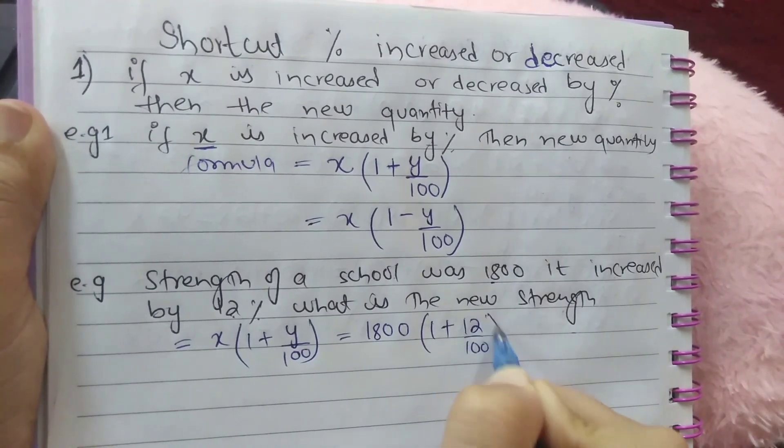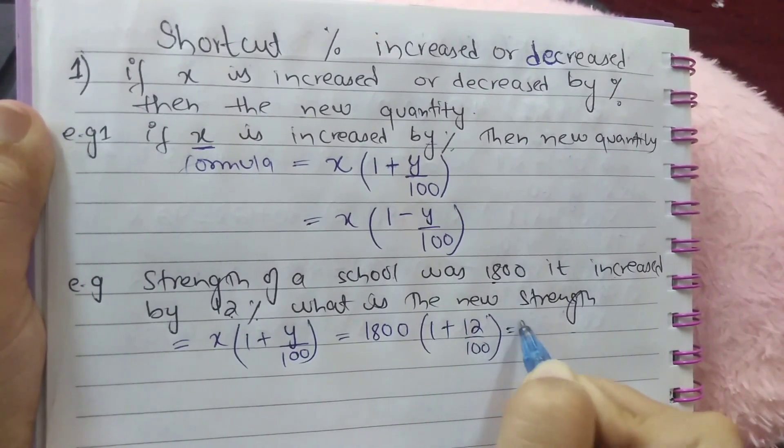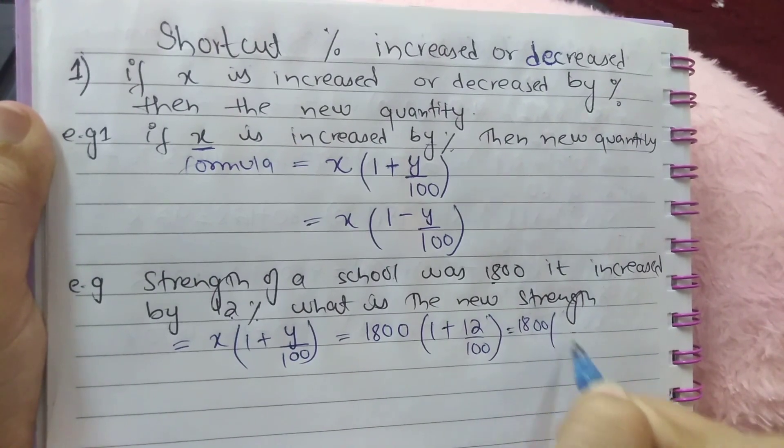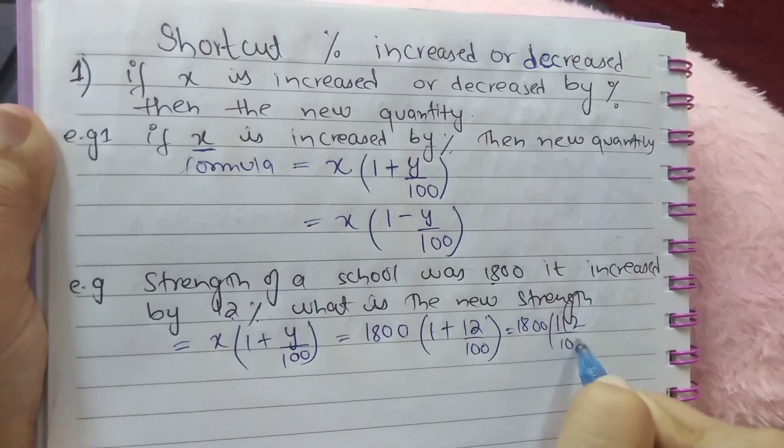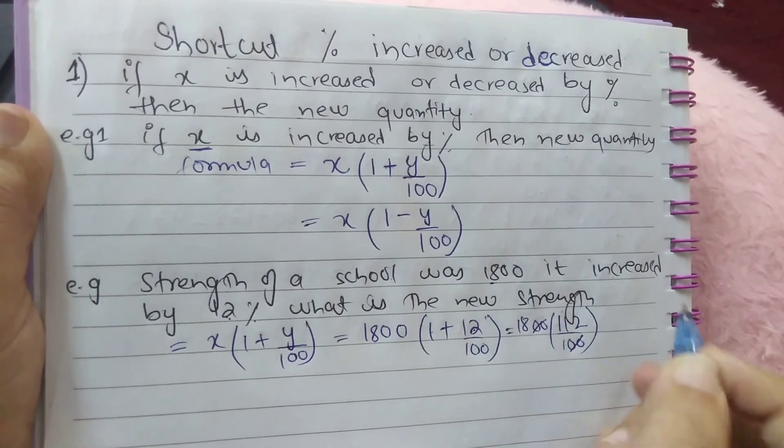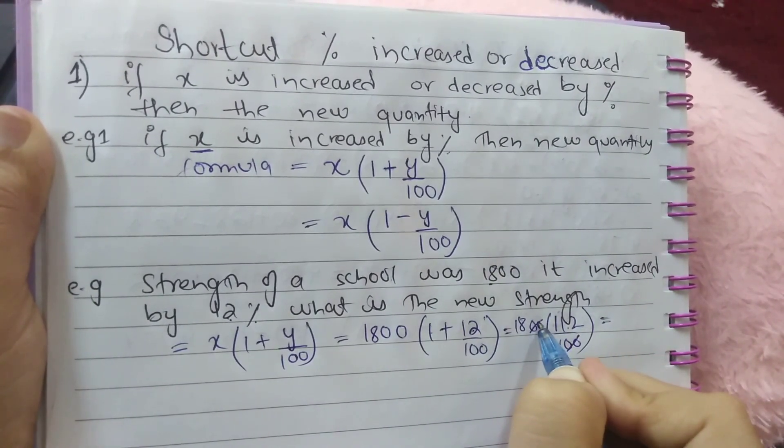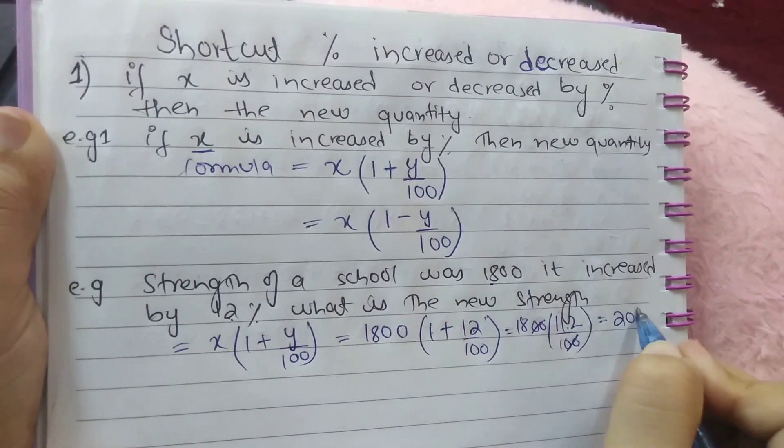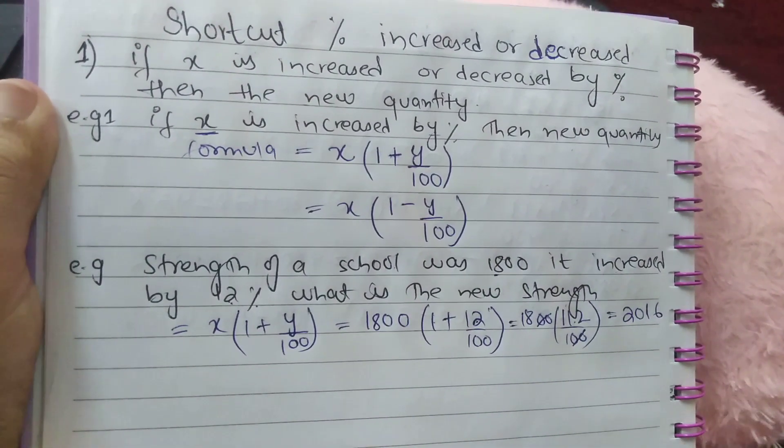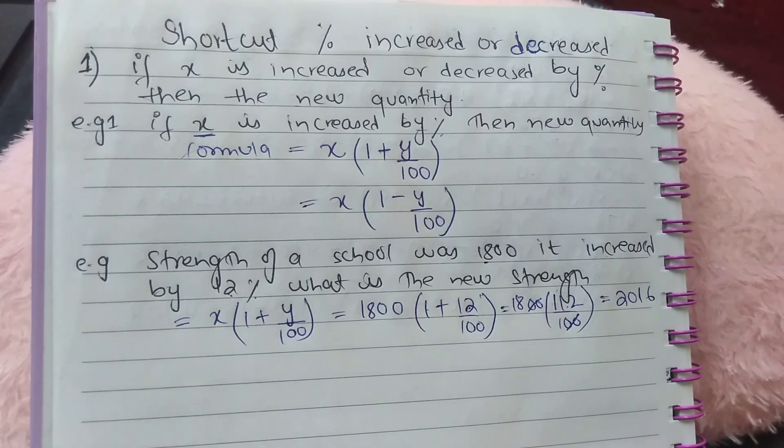X is 1800, 1 plus Y is 12 percent, so 12 by 100. By taking LCM it will be 100, so 100 plus 12 is 112 by 100. By canceling two zeros, 112 multiply by 18 is 2016.